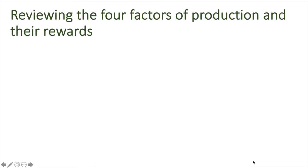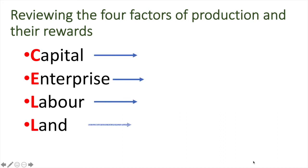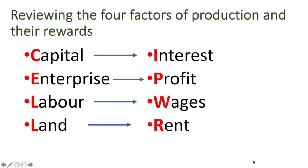Before we jump into the topic, I'd like you to recall the four factors of production: capital, enterprise, labour, and land. Each of these have a corresponding financial reward associated with them. Capital earns interest, enterprise earns profit, labour earns wages, and land earns rent. There was an earlier video on the rewards to the factors of production that you can review if you need a more in-depth refresh.